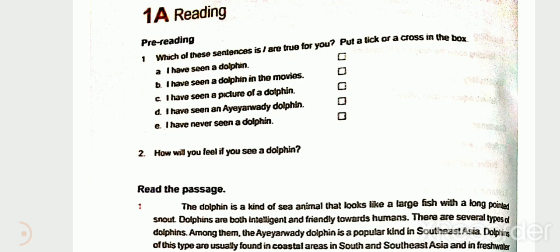Free reading activity: Which of these sentences is or are true for you? Put a tick or a cross in the box. A: I have seen a dolphin. B: I have seen a dolphin in the movie. C: I have seen a picture of a dolphin. D: I have seen an Irrawaddy dolphin. E: I have never seen a dolphin. Question 2: How will you feel if you see a dolphin?